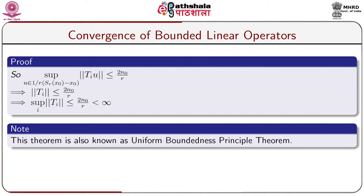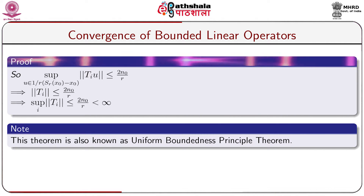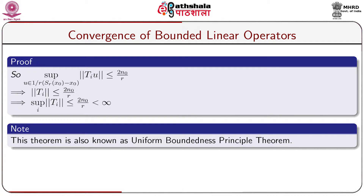Therefore, the supremum over u in (1/r)(S_r(x_0) − x_0) of norm of T_i(u) is ≤ 2n_0/r. This implies norm of T_i ≤ 2n_0/r, and hence supremum over i of norm of T_i ≤ 2n_0/r, which is finite. This means the norms of T_i are uniformly bounded, completing the proof.